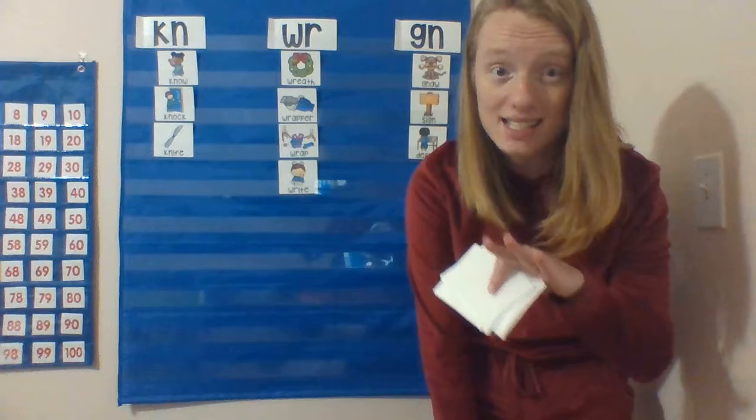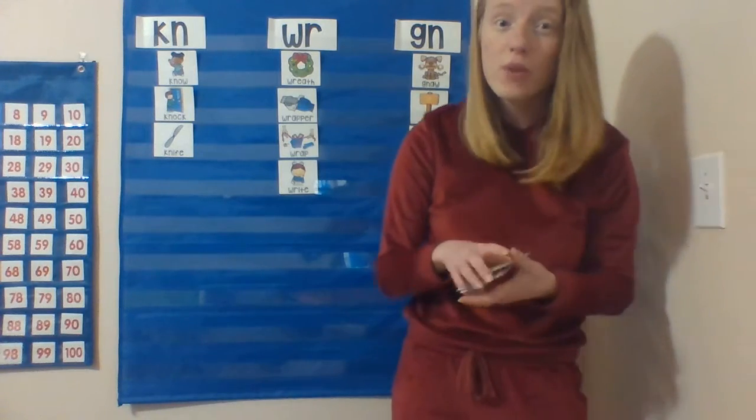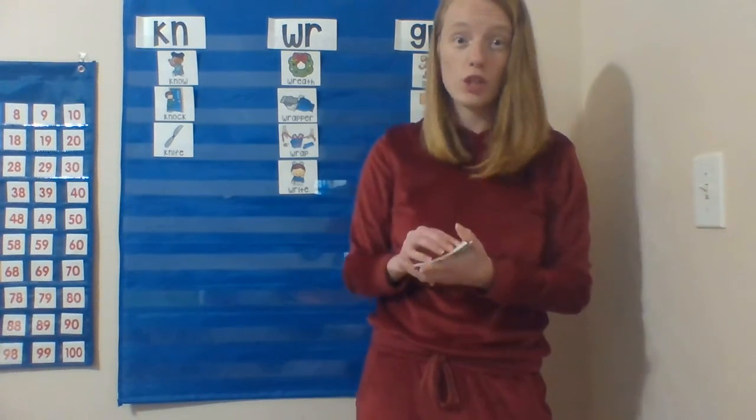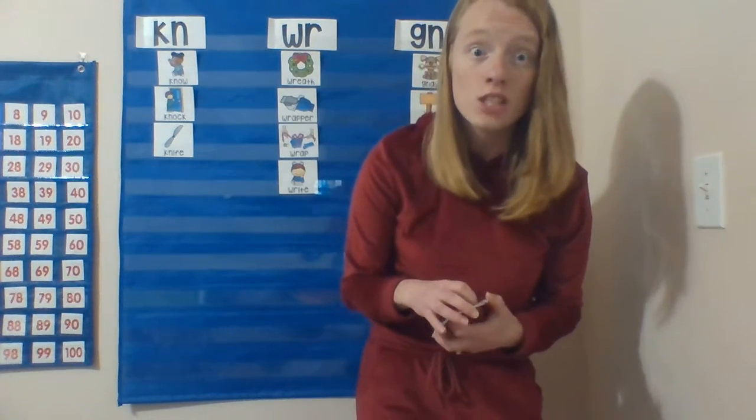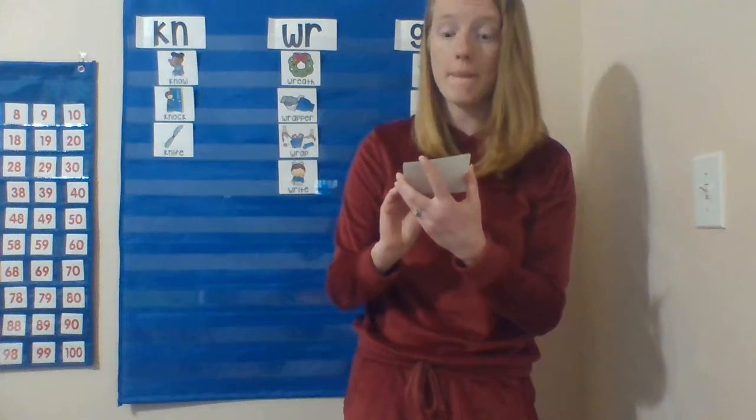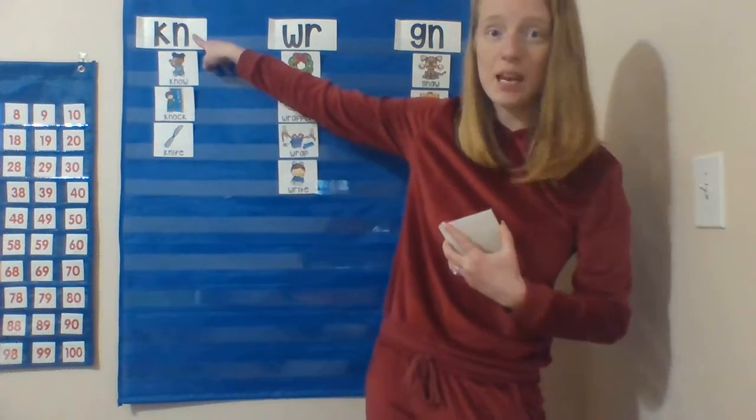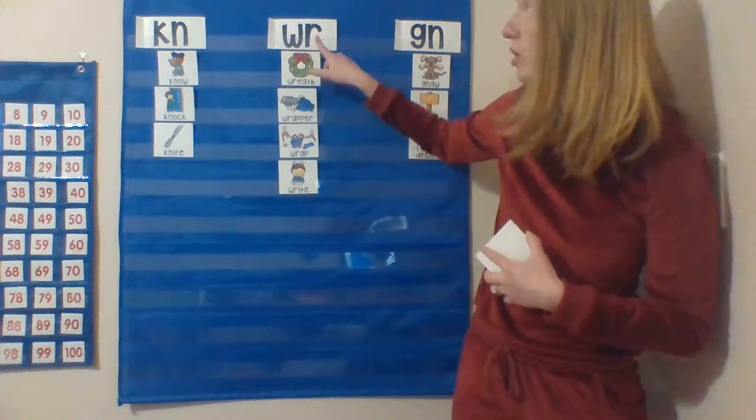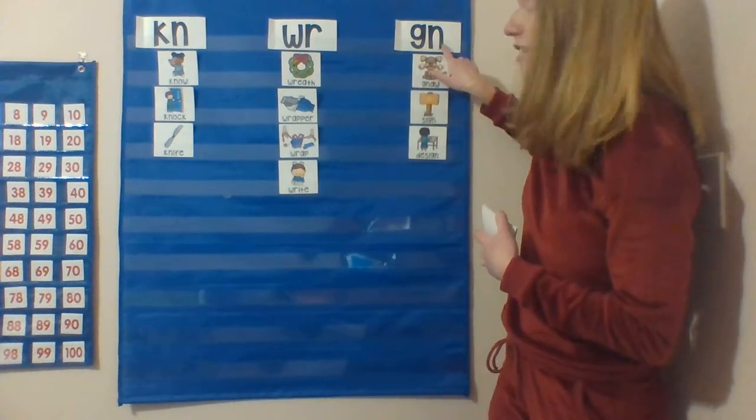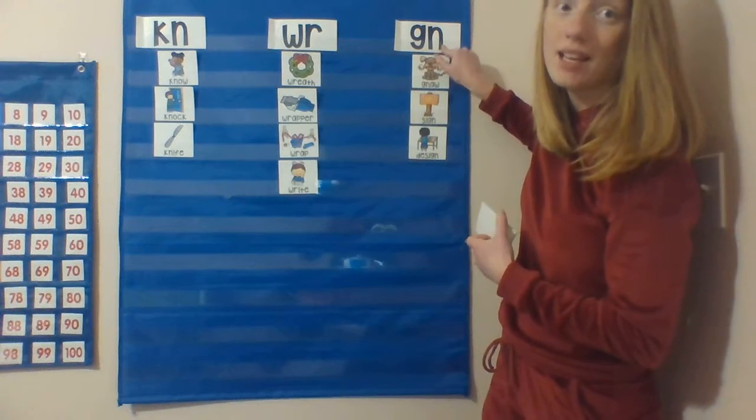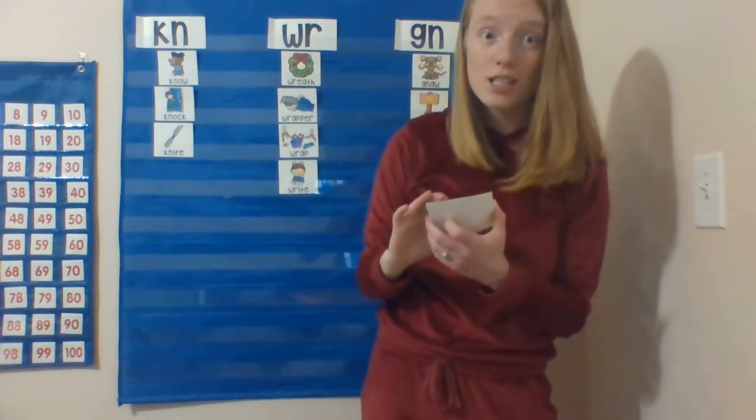They are not making a sound. So I'm going to hold some pictures up to the screen and I want you to practice reading these words with ninja letters. Are you ready? We know that KN makes the N sound, WR makes the R sound, and GN also makes the N sound. You can say it to the screen or to a grown-up. Here we go!